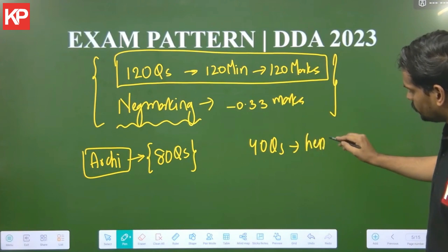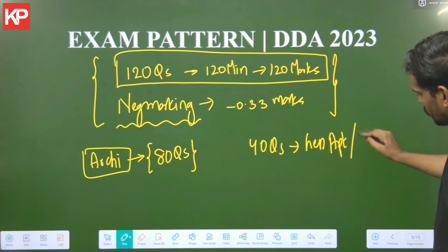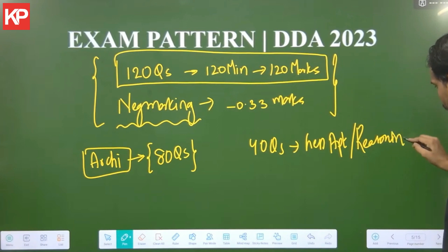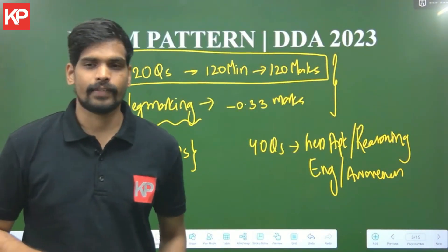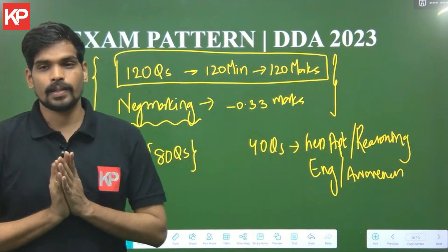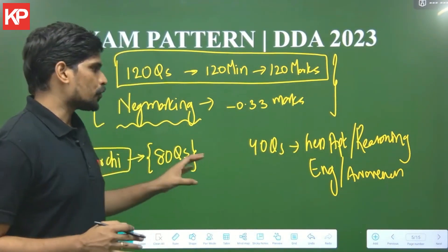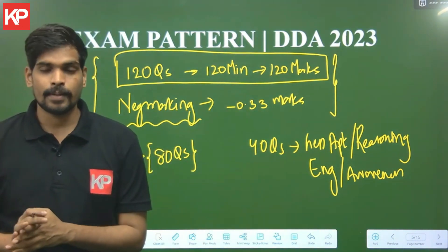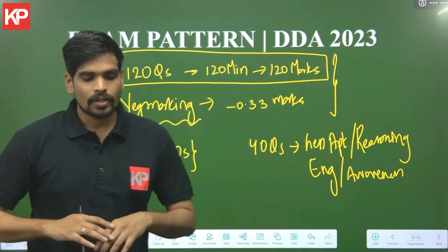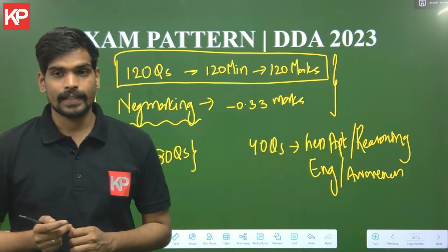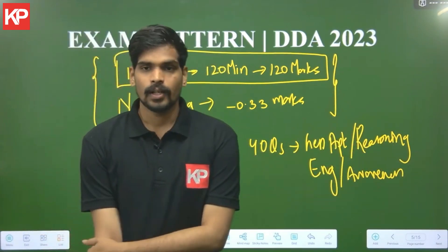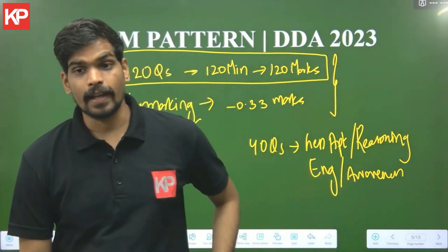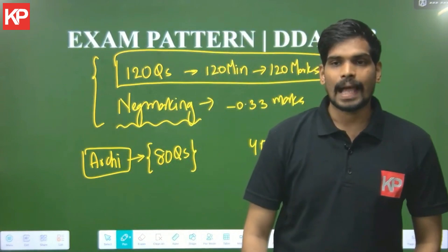40 questions from general aptitude, reasoning, English, verbal ability and awareness. General awareness will include general knowledge basically related to India and world affairs. So 40 remaining questions. That's also a major number of questions, major part of the syllabus. You should work on all the areas in the next three months to have a holistic coverage of all the topics to score well in the examination. 40 questions. 10 each from general aptitude, reasoning, English and general awareness. General knowledge. So that's with respect to the exam pattern.